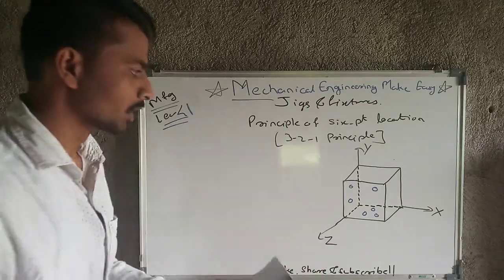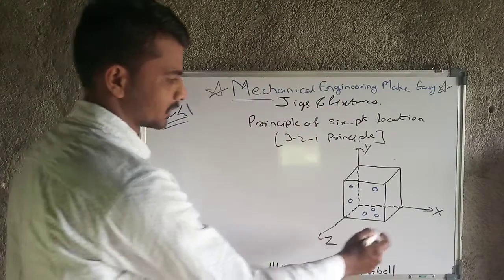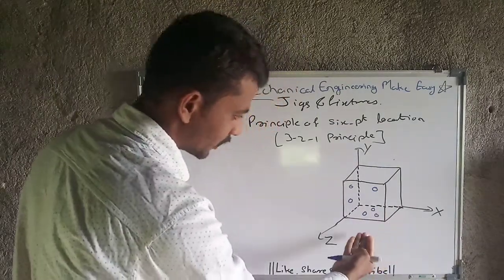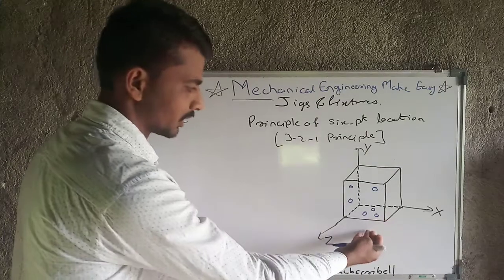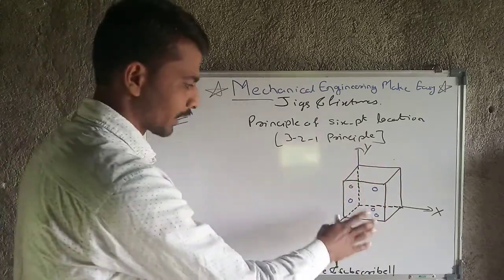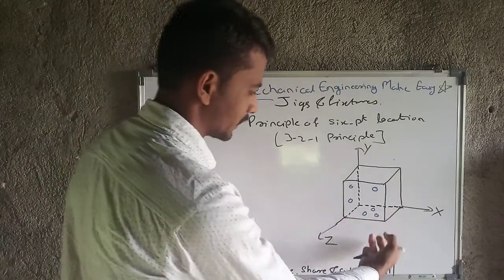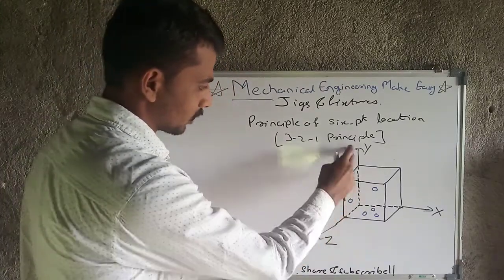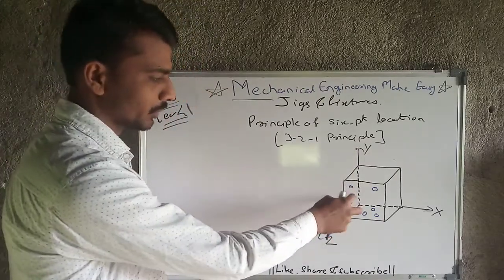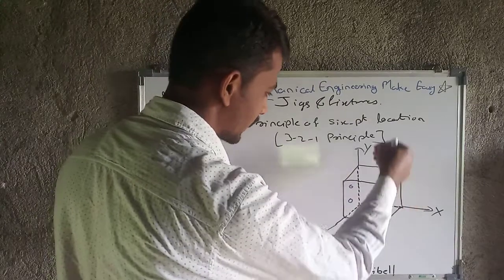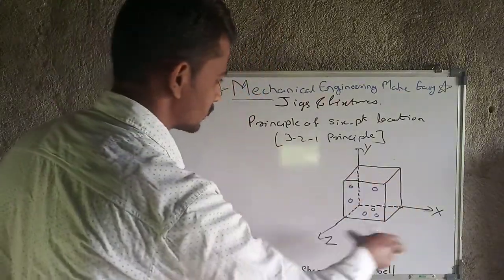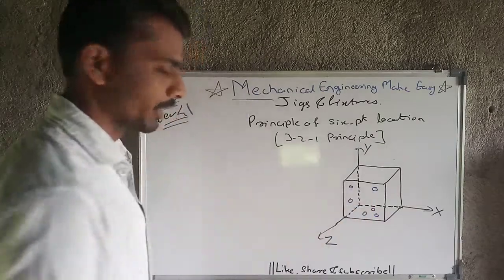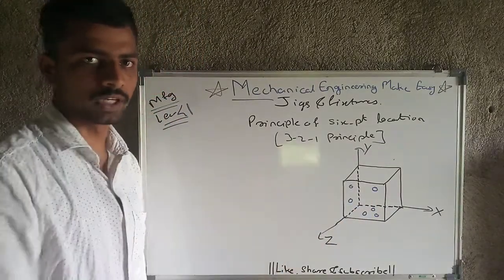Ultimately, from all directions the work piece will be restrained and will have zero degrees of freedom. We use a three-coordinate system, that is XYZ. I have drawn a cube in that system. On the bottom plane I have located three points. On the back side, which is the YZ plane, I have set two locating points. And on the XY plane I have set one locating point. This satisfies the principle of six point location, and with all six points the work piece is totally restrained with zero degrees of freedom.